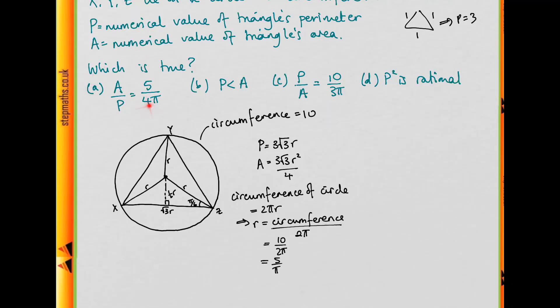So which of these is going to be true? If r = 5/π, then p = 3√3 × (5/π) = 15√3/π. When we square this, we still have π² in the denominator, so p² is not rational. Therefore option D — that p² is rational — is eliminated.